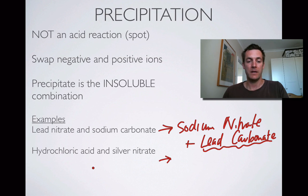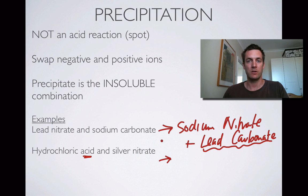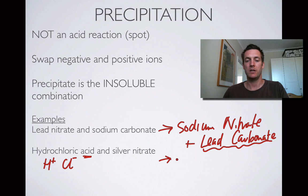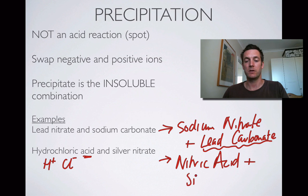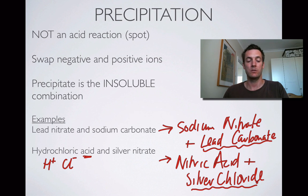Here is an acid — I've deliberately included this so we can see that acids can take part in precipitation reactions. We know it's going to be a precipitation reaction because we haven't got a metal, metal oxide, metal hydroxide, metal carbonate, or hydrogen carbonate. We do still have a positive and negative ion: H⁺ and Cl⁻. We swap them over, so we get H⁺ and nitrate — that makes nitric acid — and the other product is silver chloride. This isn't an acid reaction in spite of the acid being present; it's a precipitation reaction, and the silver chloride is insoluble so it's going to be our precipitate.